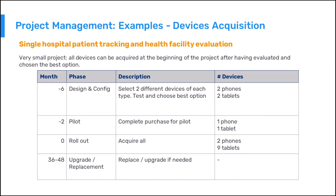In terms of device acquisition, the general recommendation is to proceed in phases as advised in the official guidelines. Following the first scenario, where 15 devices are needed, the strategy could be: acquiring two different devices of each kind — phone and tablet — to conduct tests and choose the best option during design and configuration; acquiring two devices based on the pilot plans; and acquiring the rest — two phones and nine tablets — as a single batch, then proceeding with replacement or upgrade when needed.